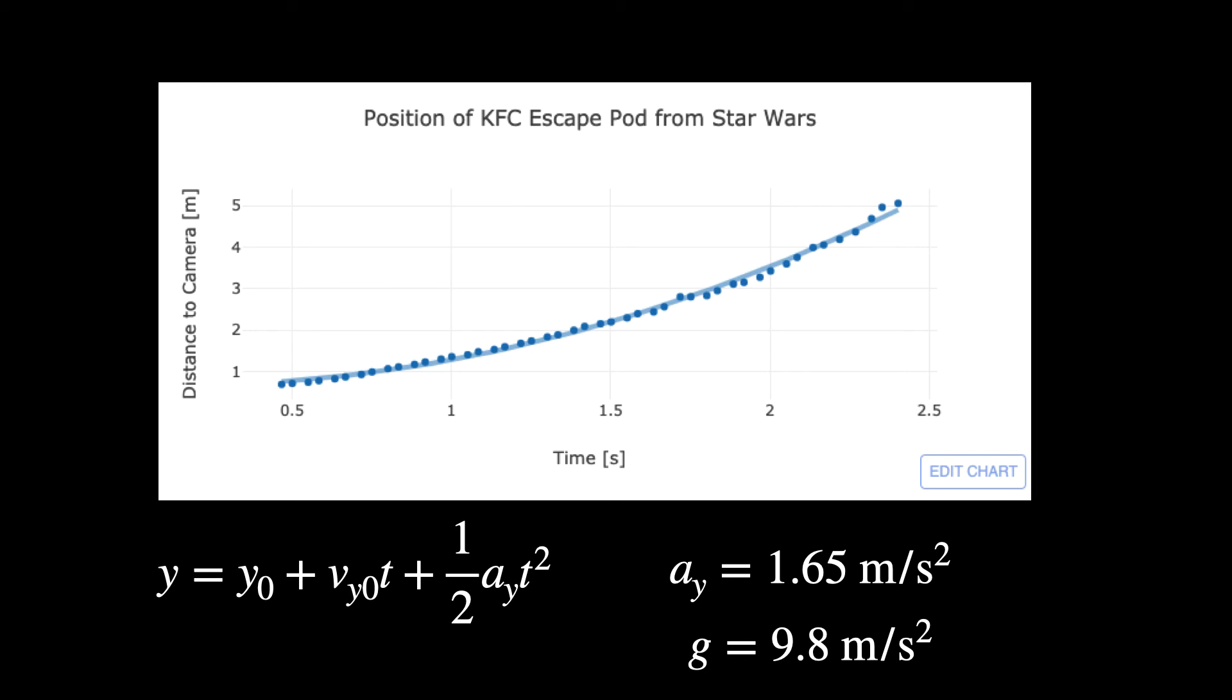If I fit an equation to that line, then I can find the acceleration. So this is the kinematic equation for an object moving at a constant acceleration relating the initial position, the initial velocity to the final position at any time. So if I fit, that's a quadratic equation. So if I fit a quadratic equation, the coefficient in front of the t squared term is one half the acceleration.